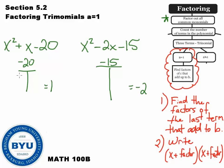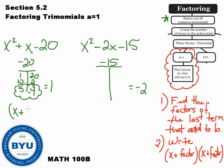Let's start writing out some factors for negative 20. There's 1 and 20, 10 and 2, and 5 and 4. I'm trying to get these to add up to 1, and because c is negative, one of these factors has to be negative. If I make the 4 negative, then 5 minus 4 gives me positive 1. Those are our factors. So my final answer would be x plus 5 and x minus 4.